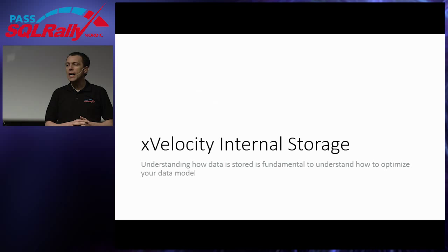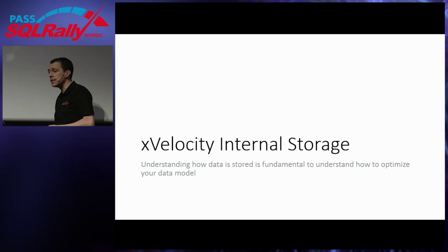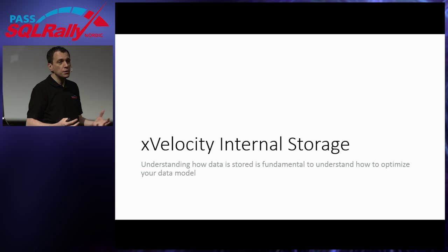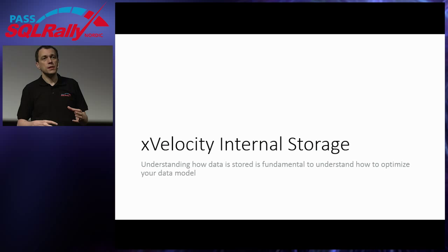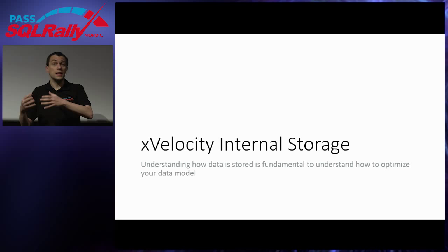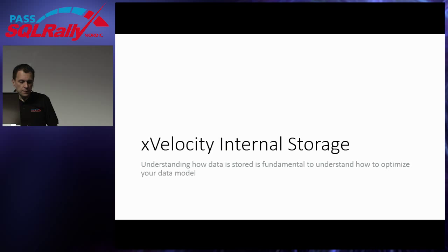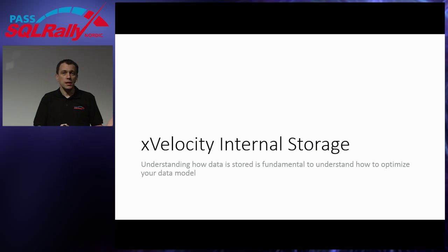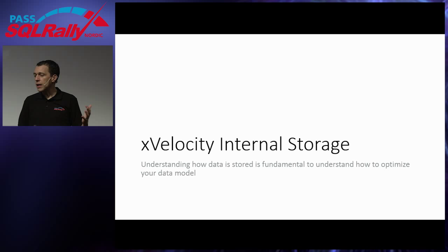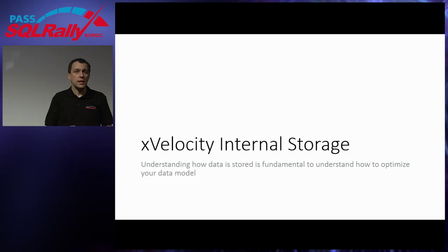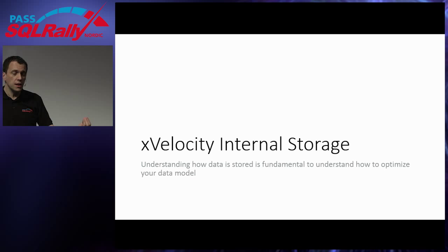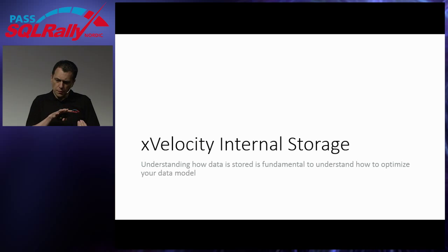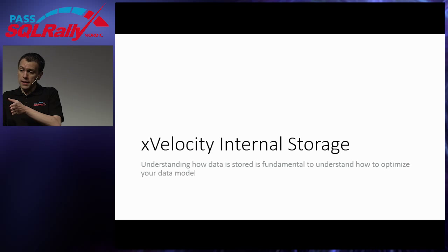The first topic is how data is stored inside X-Velocity. X-Velocity is the internal engine of Power Pivot and Tabular. This engine is also similar to the one used in columnar store indexes in SQL Server — it is the same code base adapted to SQL Server. The idea is that we have an in-memory columnar storage database where data are stored column by column instead of row by row.